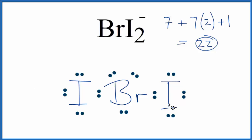Looking at the formal charges for BrI2-, the iodine here is 0, this one's the same, 0. And then the bromine in the center is -1. That makes sense. We would expect the negative formal charge to be on the more electronegative element.